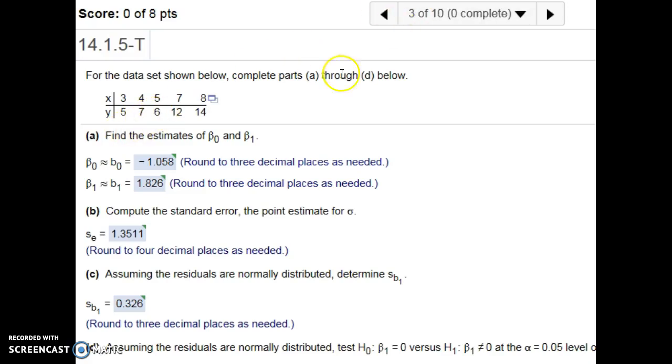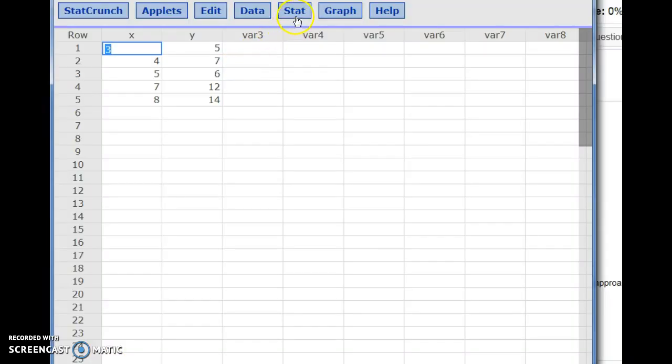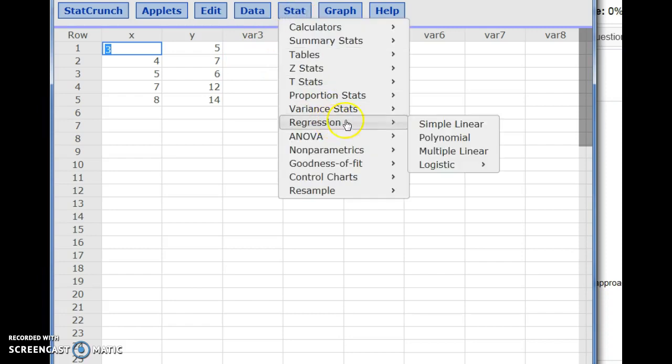To start with number three, we're going to find estimates using StatCrunch. Open the data in StatCrunch, then go to Stat, Regression.